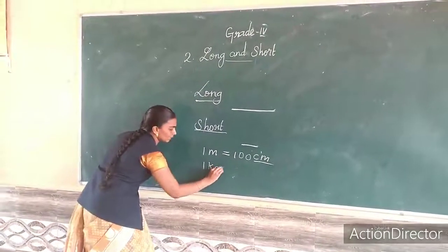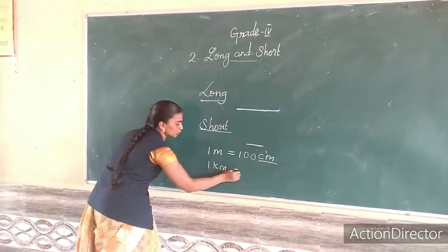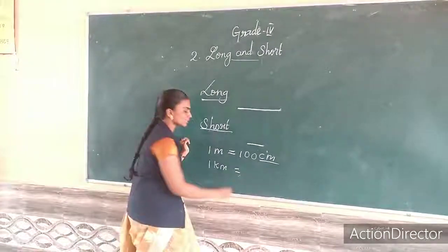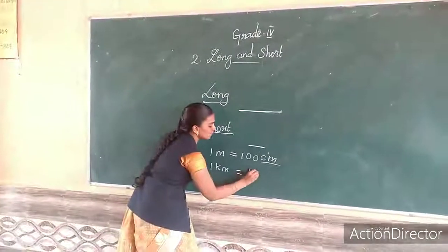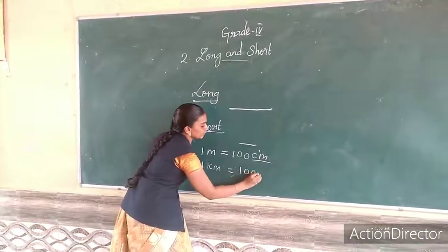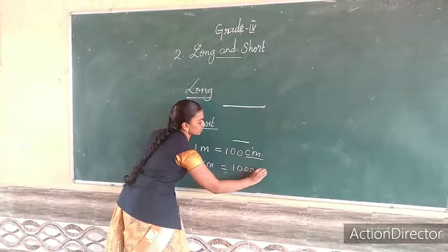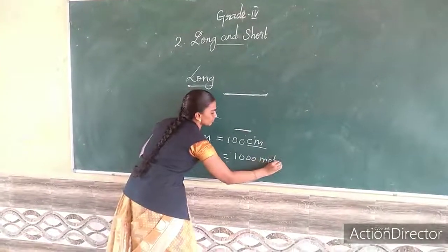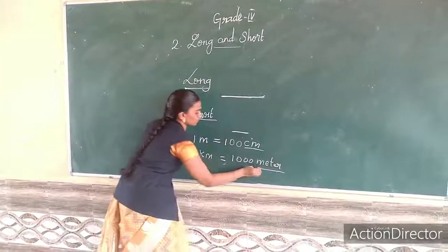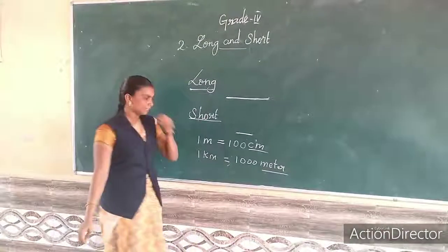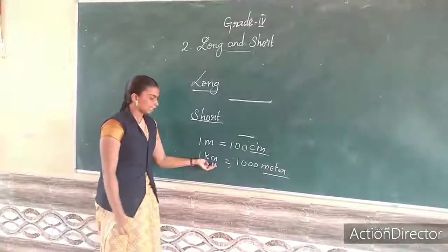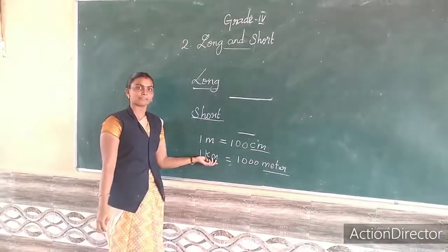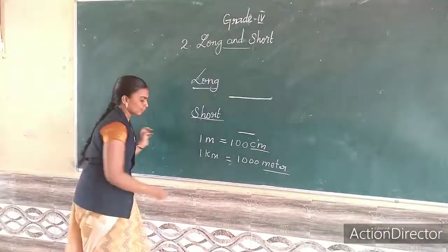One kilometer is equal to how many meters? Thousand meters. CM is the short term of kilometer.